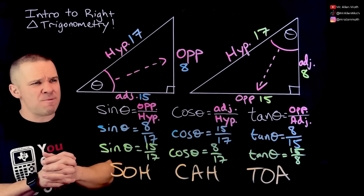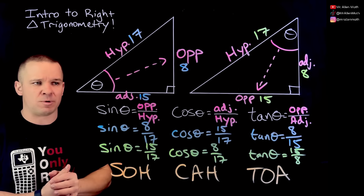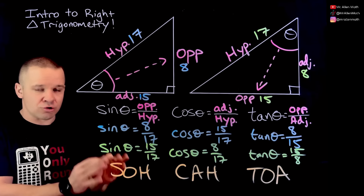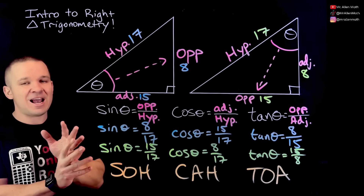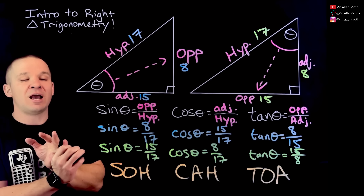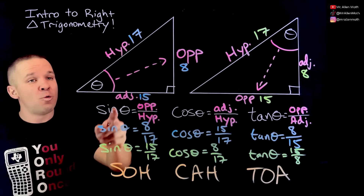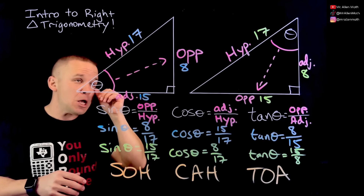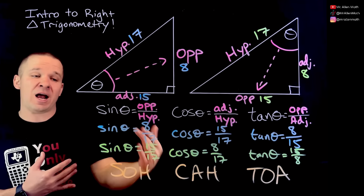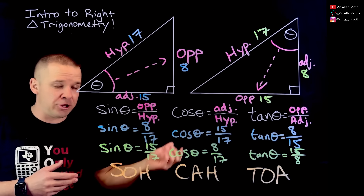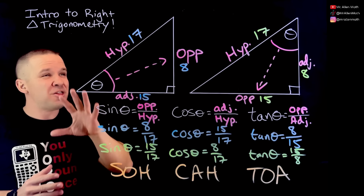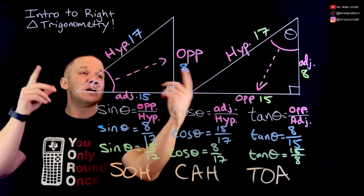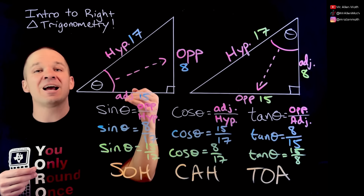You might be wondering how you'd actually use this — it seems like just making fractions. But this is just the tip of the iceberg. You can use trig to solve for missing sides, and you can even figure out the angle measure. We could solve for an angle given information about any two sides — and that's pretty powerful stuff. In the next part, I'll show you how to solve for angles, and in the third part, how to solve for missing sides.